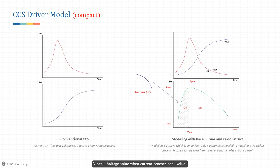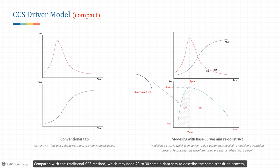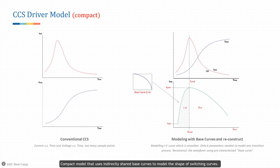For a given IV curve we can split it into two halves, each half matched with a pre-characterized base curve. To exactly match the IV curve, only six parameters are needed: I_initial (switching current at the starting point), I_peak (peak switching current), V_peak (voltage when current reaches peak), T_peak (time when current reaches peak), Left ID (reference base curve ID for the left half), and Right ID (reference base curve ID for the right half). Compared with the traditional CCS method which may need 20 to 30 sample data sets, the compact CCS method consumes much less space. Compact model uses indirectly shared base curves to model the shape of switching curves, allowing each base curve to model multiple switching curves with similar shapes, improving modeling efficiency and compressing library size.